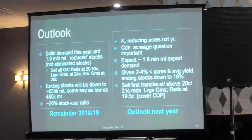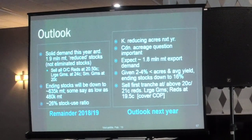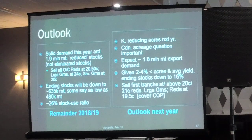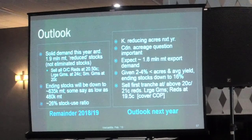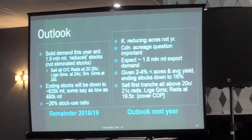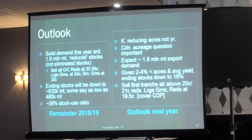Kazakhstan will likely reduce pulse acres quite a bit in the coming year — they had trouble last year, don't have proper cleaning systems or grades, and have quality problems with Turkey. It's not a smooth road; Saskatchewan had to learn these things 40 years ago too. Next year we should definitely get a break there, which should help us into some of those countries. If you see values that work and give you even a small return, I would sell forward some new production.